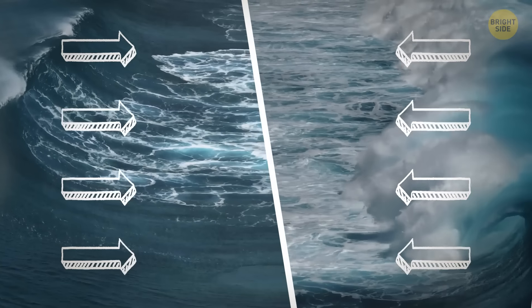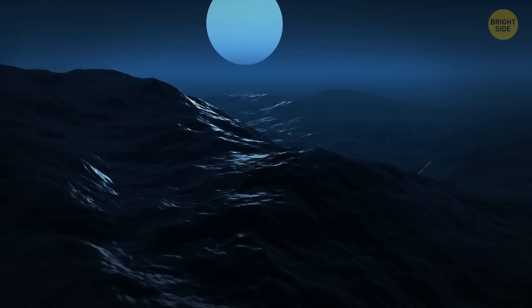According to one version, rogue waves appear because strong waves create big waves. When two such waves collide with each other, a giant rogue wave may appear.